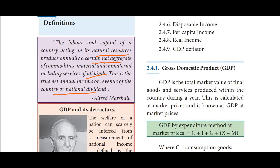So, labour and capital acting on natural resources annually produce a certain net aggregate — commodities, material and immaterial, including services. All of this together is the true net annual income or revenue of the country, or national dividend. All of this is national income.